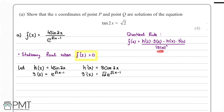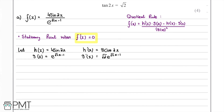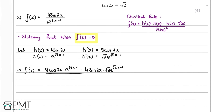Substituting into the quotient rule formula, f'(x) equals 8 cos(2x) multiplied by e to the power of root 2x minus 1, minus 4 sin(2x) multiplied by root 2 e to the power of root 2x minus 1, all divided by e to the power of root 2x minus 1, squared.